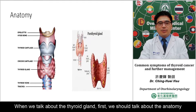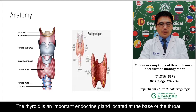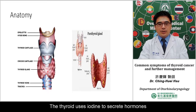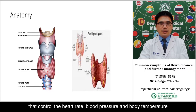When we talk about the thyroid gland, first we will talk about the anatomy. The thyroid gland is an important endocrine gland located at the base of the throat. It composes two wing-shaped lobes and the isthmus that connects them. The thyroid gland uses iodine to secrete hormones that control heart rate, blood pressure, and body temperature.